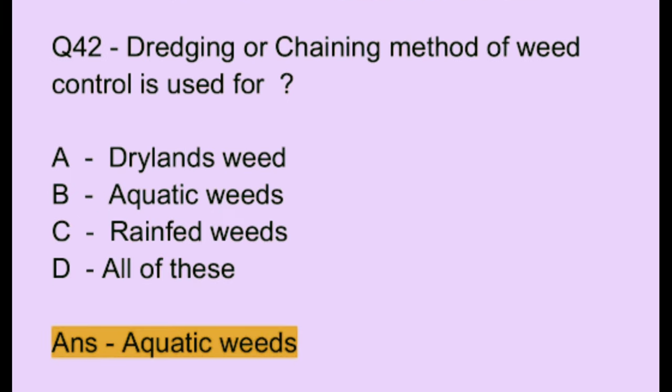Question number 42. Dredging or chaining method of weed control is used for: Option A: dryland weeds. Option B: aquatic weeds. Option C: rainfed weeds. Option D: all of these. The correct answer is option B, which is aquatic weeds.